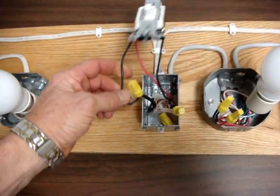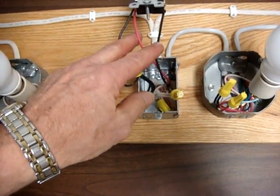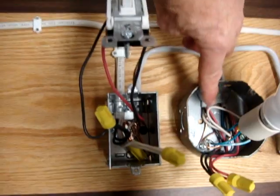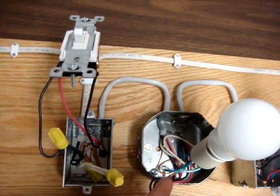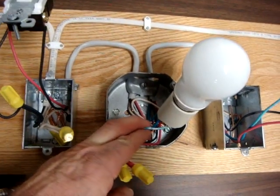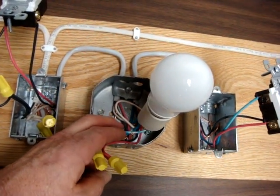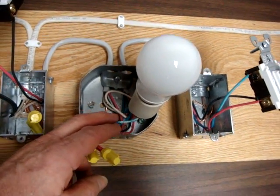In this particular case, the power comes in, comes through the travelers, through the light, and goes back out. Spliced the red and the black. And because the white is no longer a neutral conductor, or a current carrying conductor, it's part of the control system, I used a blue magic marker to color it a different color.